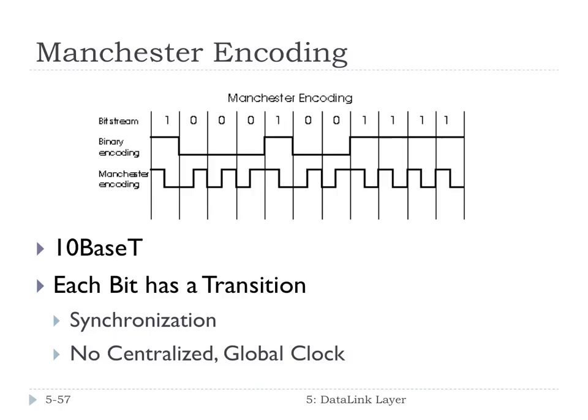The last thing to mention is Manchester encoding — the encoding scheme for Ethernet, at least in 10BaseT. Imagine we want to send this stream of bits: 1, 0, 0, 0, 1, 0, 0. If we encode that in binary, that's high, low, low, low, high, low, low — that would be the naive way of encoding digital information on a signal.